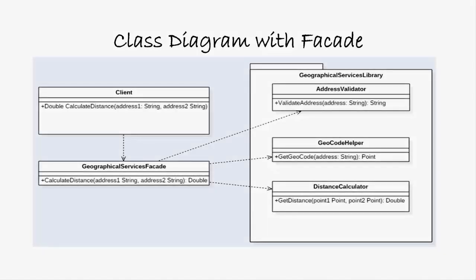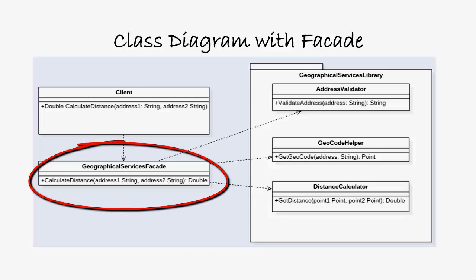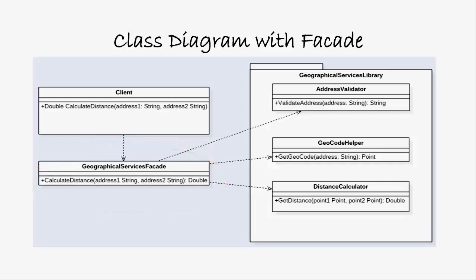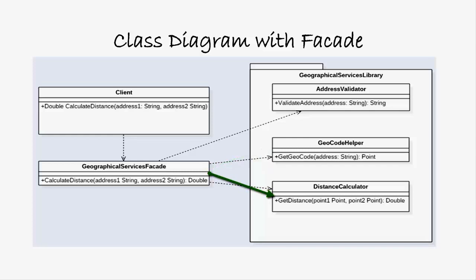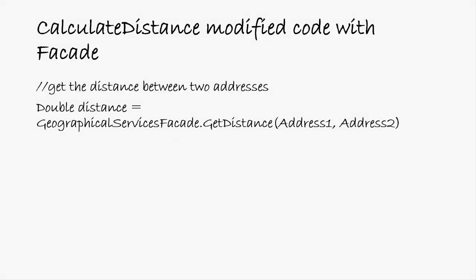Here is the class diagram with a facade class introduced. All the classes are the same except a new GeographicalServicesFacade class is introduced on the left hand bottom side. The client interacts with the GeographicalServicesFacade class, and the facade class instance interacts with AddressValidator, GeocodeHelper, and DistanceCalculator. The interface to the Geographical Services Library is simplified by the introduction of the GeographicalServicesFacade class, so the client's interface to the library is very simple.